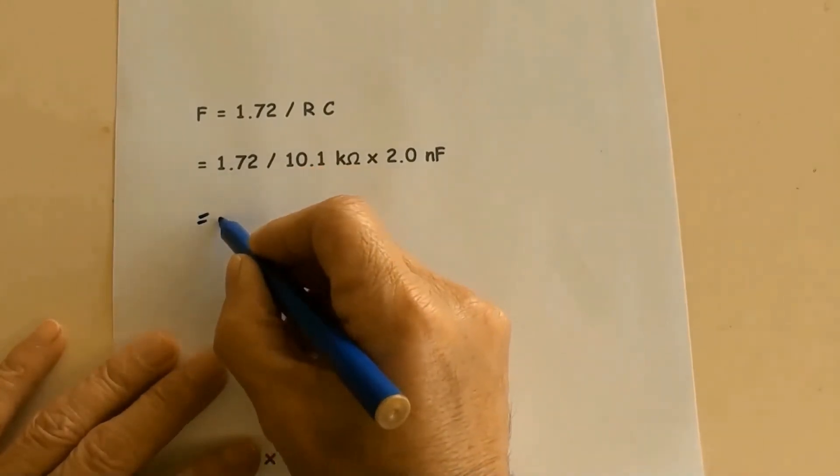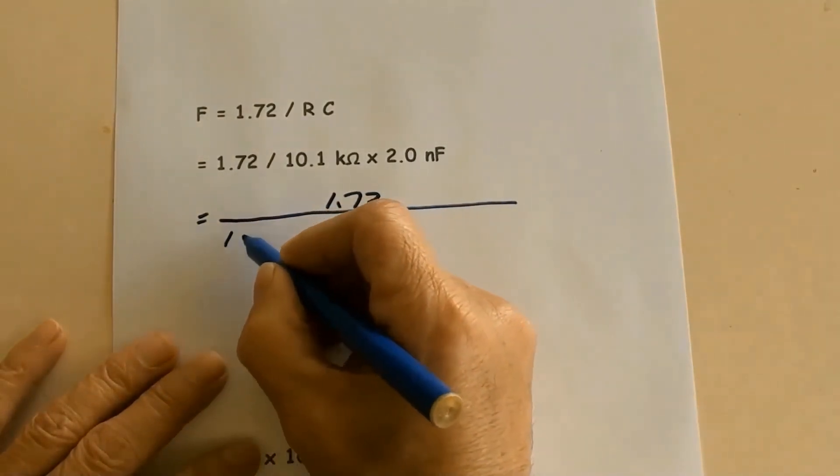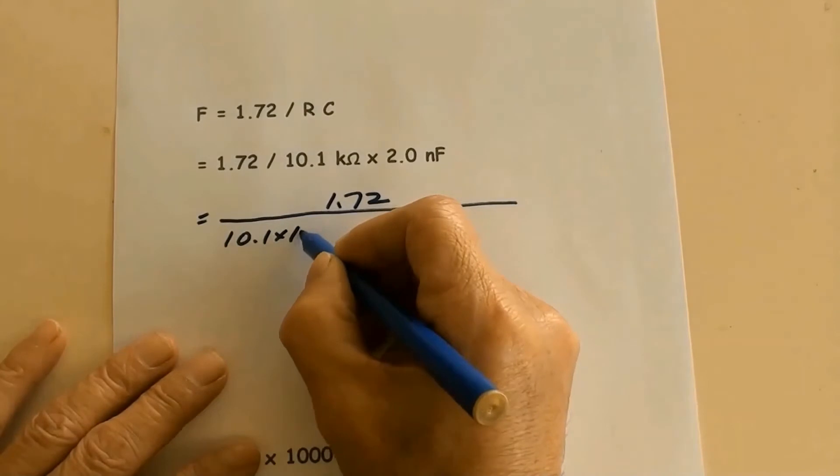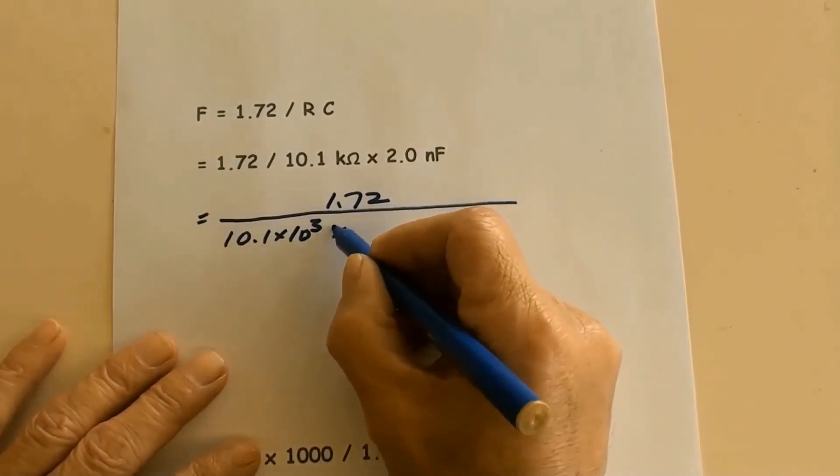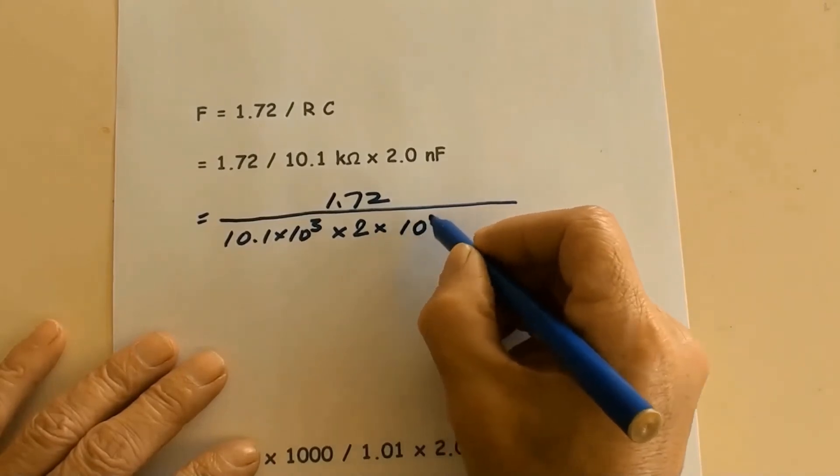F equals 1.72 over 10.1 times 10 to the power of 3 times 2 times 10 to the power of negative 9.